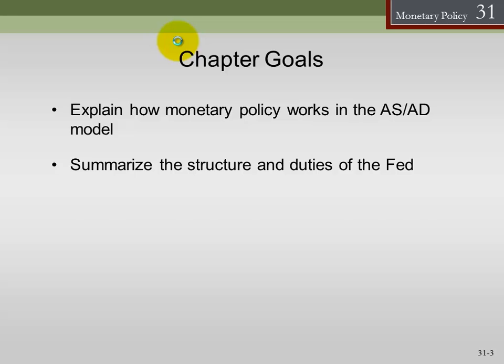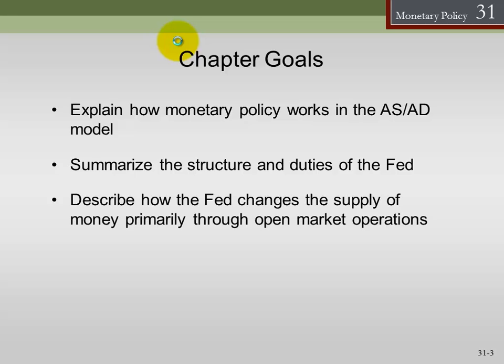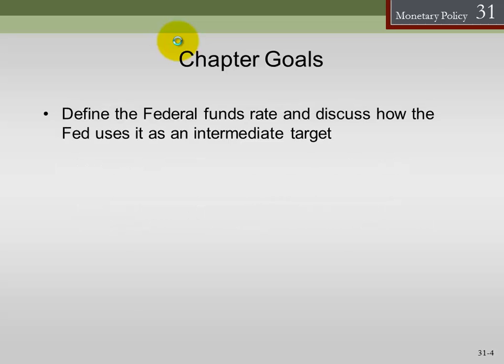We'll summarize the structure of the Fed, describe how the Fed changes the supply of money primarily through open market operations, define the Fed funds rate, and discuss how the Fed uses it as an intermediate target. We'll also talk about policy targeting and how that works.